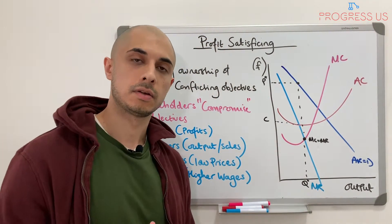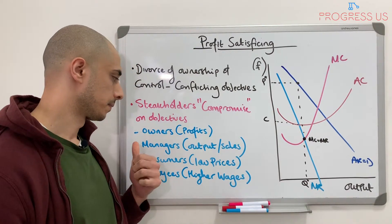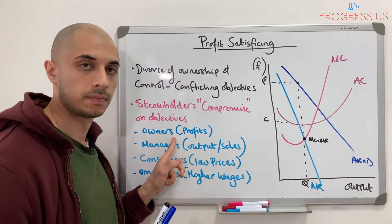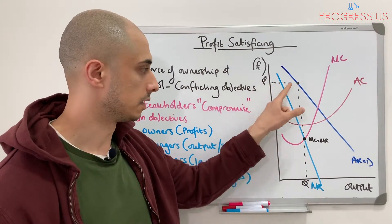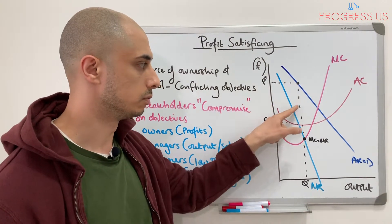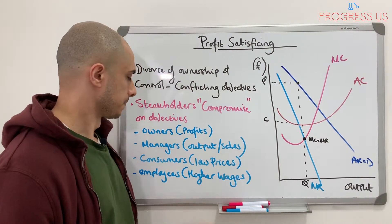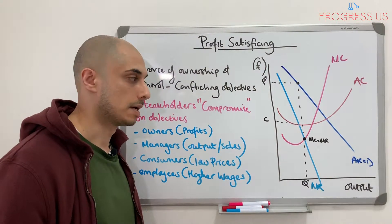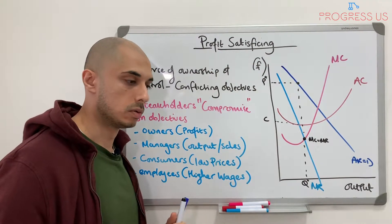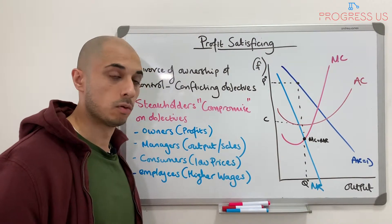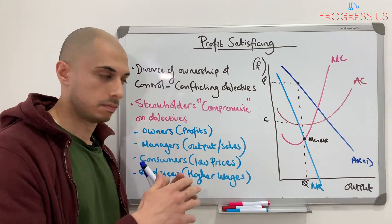Profit satisficing is essentially about how we now satisfy the different objectives that each one of these stakeholders would like to receive. Owners want more dividends and more profit — they want a return on their investment. Currently they're receiving that because profits are being maximised, represented by the P star C rectangle of supernormal profits. Managers' wages are generally linked to the amount of sales revenue or the size of the firm, so managers are looking to increase output more.